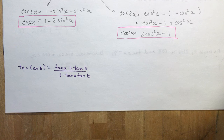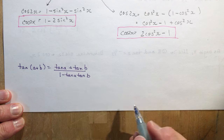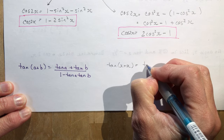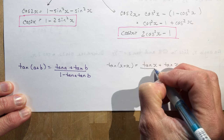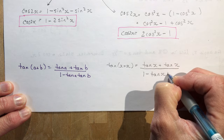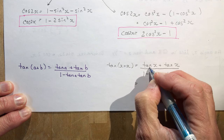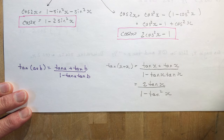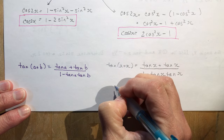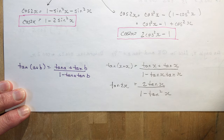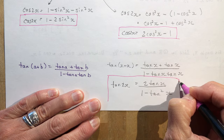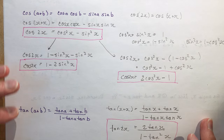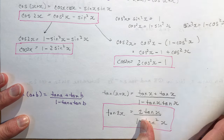Let's do tan of 2x now. Remember the formula tan of x plus x equals tan x plus tan x over 1 minus tan x times tan x. Tan x plus tan x is 2 tan x, so tan 2x equals 2 tan x over 1 minus tan squared x. That's an easy one to derive. You only really need to remember sin 2x, cos 2x, and tan 2x — you can figure out the other two cos 2x variations on your own.